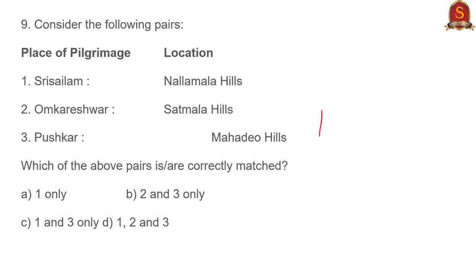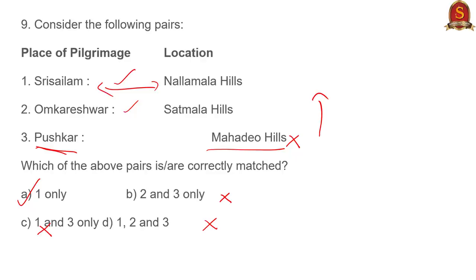Question nine: match pilgrimage places with locations. Reading in reverse: Pushkar is in Rajasthan, but it is matched with Mahadeo Hills, which is not in Western India. Statement three is wrong, so B, D, and C go out. The answer is A. The same principle repeats: find one clearly wrong matching, and the answer narrows immediately. You don't need to know the exact locations of Sri Sailam or Omkareshwar.